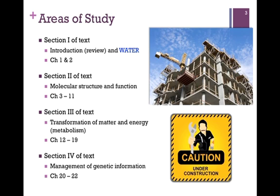The textbook is divided into four basic sections, and we will consider them in order, with only one exception. Section 1 includes a brief introduction and review in Chapter 1, followed by a consideration of water and its properties in Chapter 2. All living systems operate in an aqueous environment, so understanding the properties of water is crucial to understanding how molecules behave in that environment. Section 2 of the text includes Chapters 3 through 11, and is essentially a consideration of molecular structure and function. One of the most fundamental tenets of biochemistry is the direct relationship between the structure of a biological molecule or system and its function.